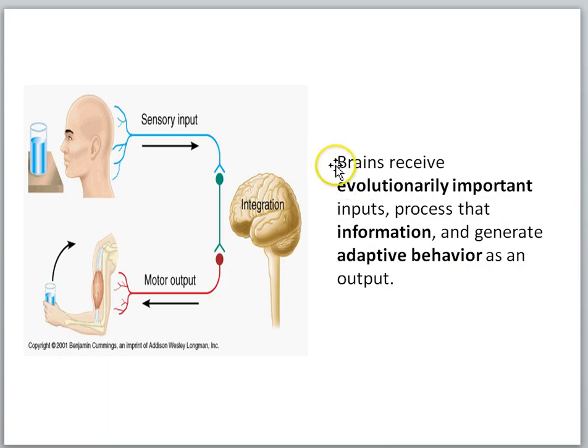So brains receive evolutionarily important inputs, process that information, and generate adaptive behavior as an output. And by evolutionarily important inputs we mean that when we look around the animal kingdom we see that for example different kinds of animals have different types of sensory organs, and the different types of sensory organs make sense in the kind of environment in which they live. So we'll see examples of that as we study the animal world.